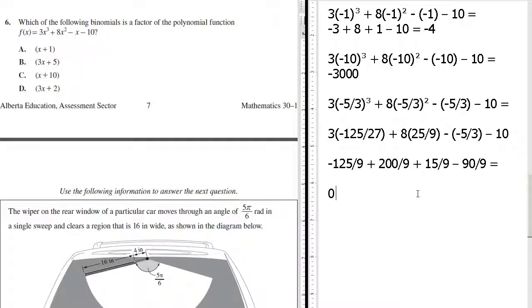Our answer, our zero is the negative five-thirds, which means our answer is B, three x plus five. We found our answer.